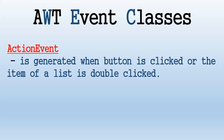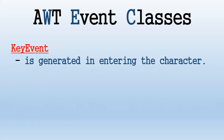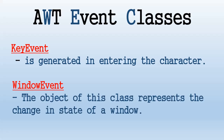ActionEvent is generated when a button is clicked or an item in a list is double-clicked. MouseEvent is an event that indicates a mouse action has occurred within a component — it can be a mouse click, mouse press, etc. KeyEvent is generated when entering a character; examples include typing a key, pressing a key, and releasing a key. WindowEvent represents a change in state of a window; the window event state can be activated, closed, closing, etc.